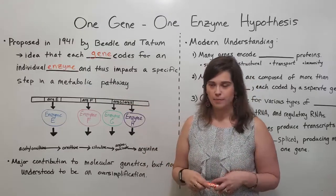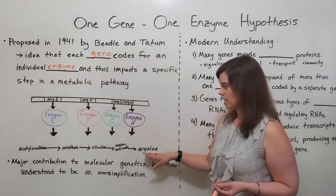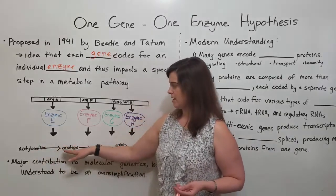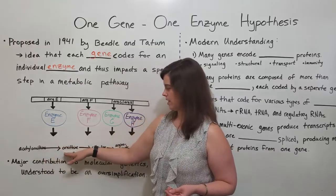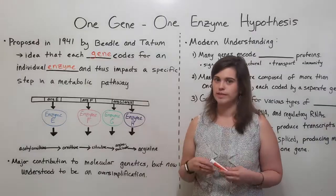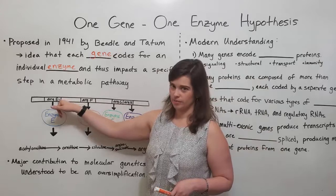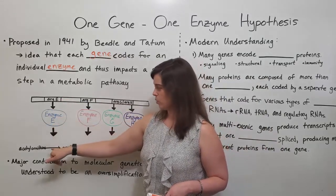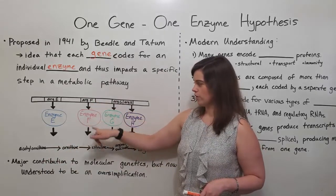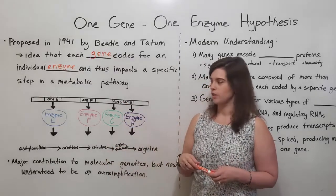What do we mean by metabolic pathway? For example, the synthesis of the amino acid arginine in cells is a stepwise process where you start with a precursor and this precursor is transformed into other things one after the other until arginine is eventually synthesized. Beadle and Tatum had this idea that a gene would code for an enzyme that catalyzes one step in this process, and another gene would code for another enzyme that catalyzed another step, and so on and so forth.